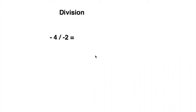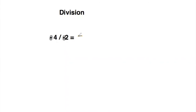The last operation we're going to do is division. Division works by the same rule as multiplication and addition: when you divide two negative numbers by each other, you get a positive number. So for negative four divided by negative two, you put a positive sign in front and do four divided by two, which is two. So the answer is positive two.